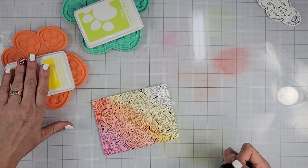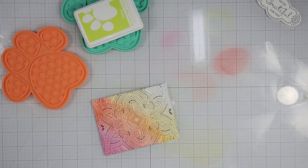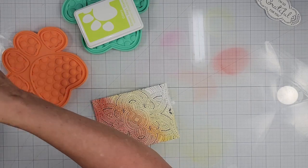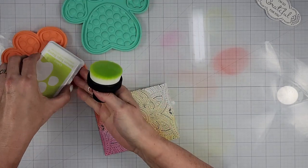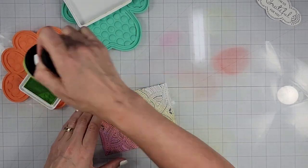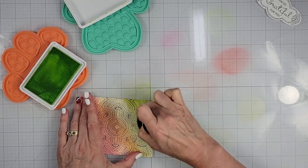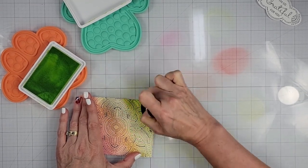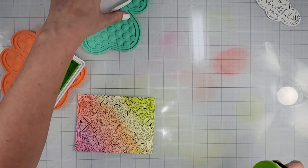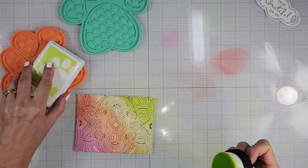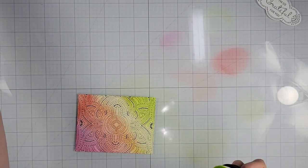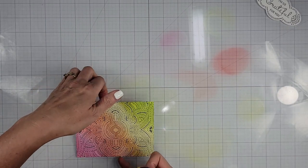And the last color I'm going to use is a celery. So we're just going to blend that right down here in the corner. Oh yeah, that is a beautiful color. Okay. So let me clean this up and I'll be right back.